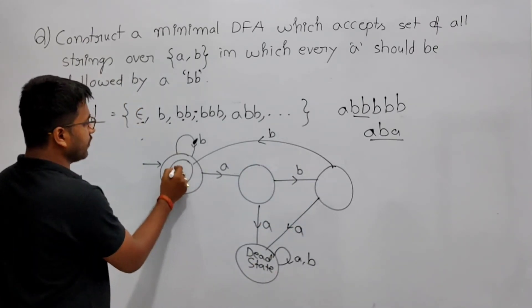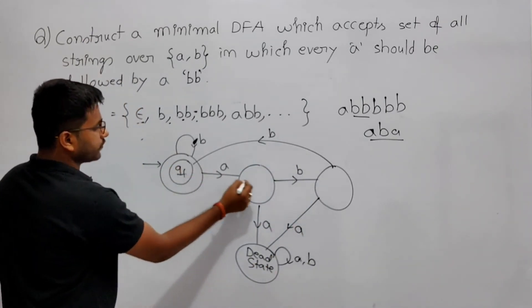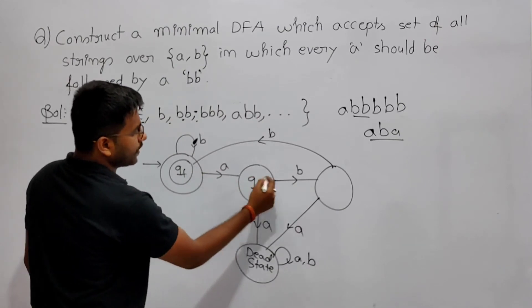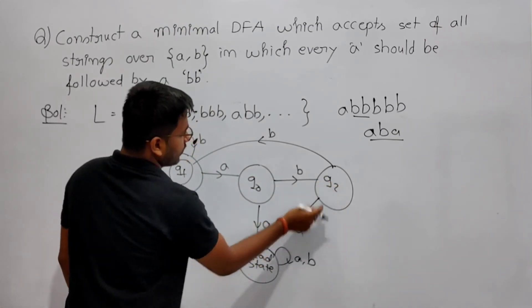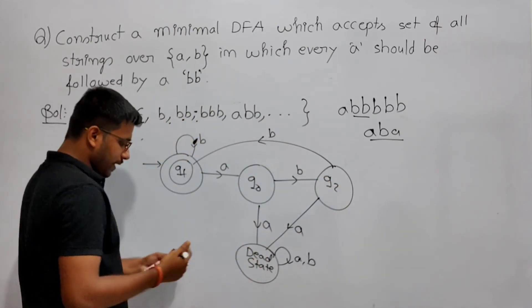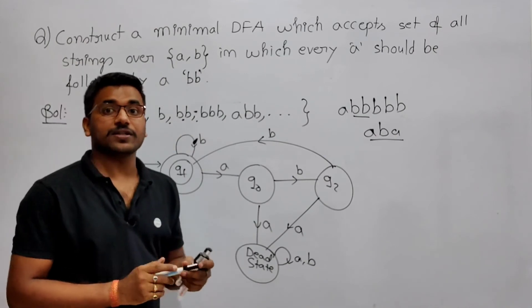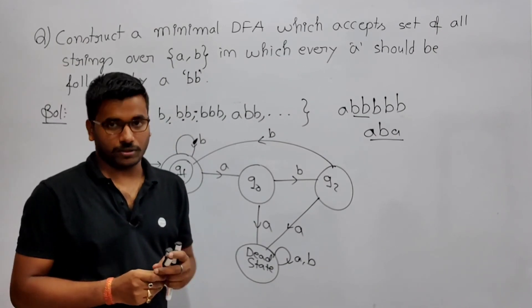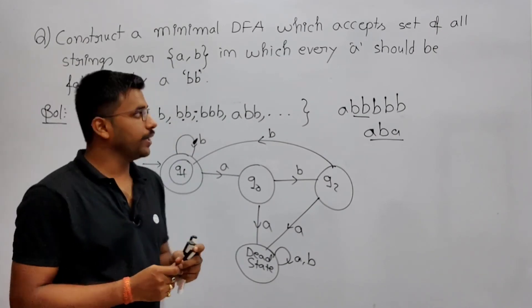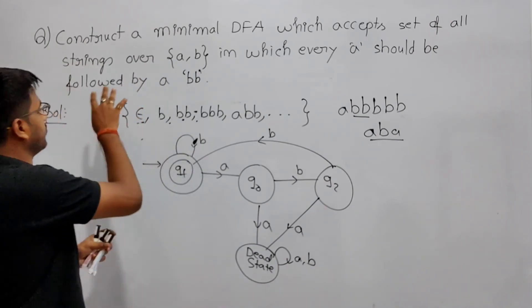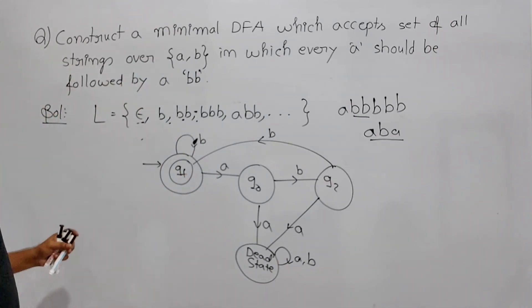For this state, A and B transitions are given. For this state, A and B are given. For this state, A and B are given. For this state, A and B are given. So this way you can check whether you have given the transition for every state or not. So this is the minimal DFA for this language.